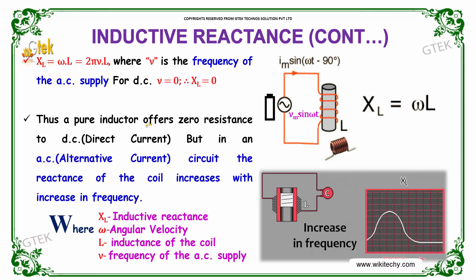Thus, a pure inductor offers zero resistance to DC. But in an alternating current circuit, the reactance of the coil increases with increase in frequency.